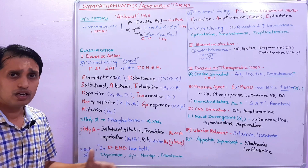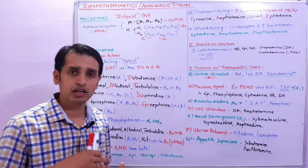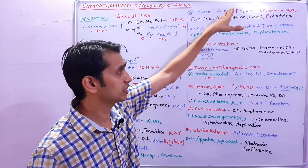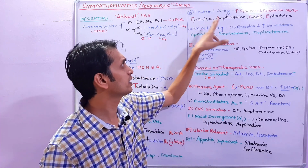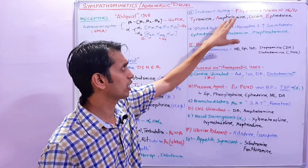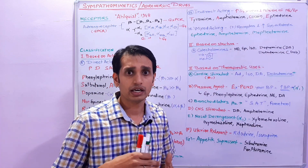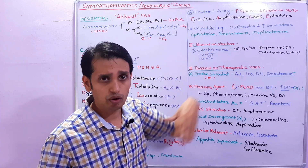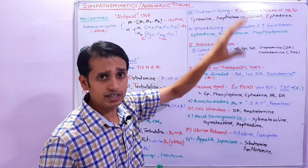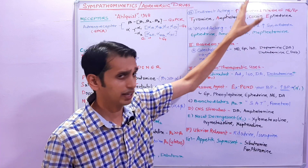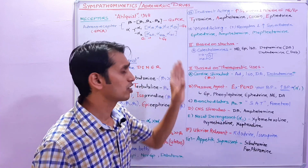Now coming to indirect-acting drugs, also called sympathomimetic drugs. This type of drug increases synthesis or release of norepinephrine or adrenaline. They can be remembered by the mnemonic 'TACE' or 'EAT': T for tyramine, A for amphetamine, C for cocaine, and E for ephedrine. Cocaine is a norepinephrine reuptake transporter blocker. These drugs enhance the synthesis or release and increase the availability of norepinephrine at the synaptic junctions.